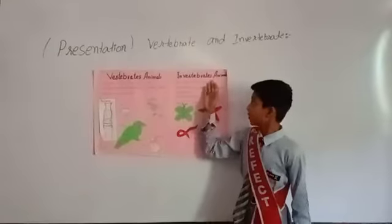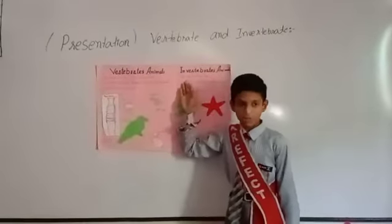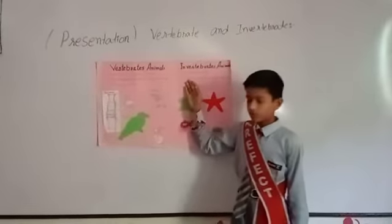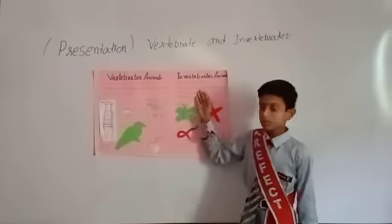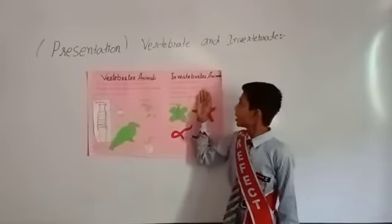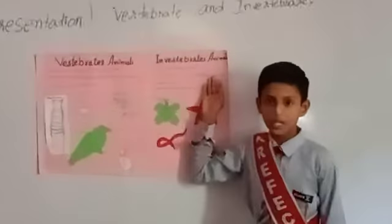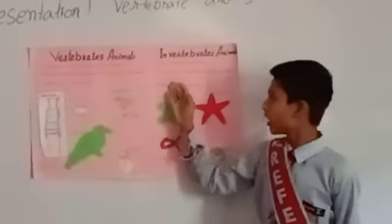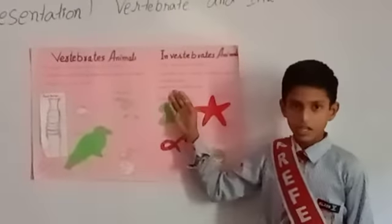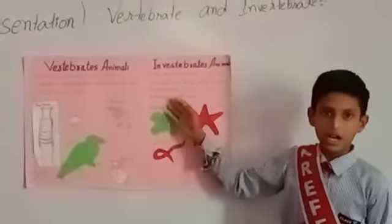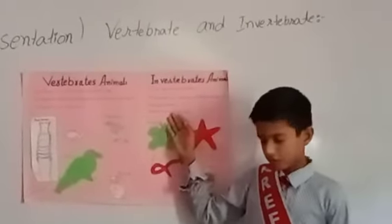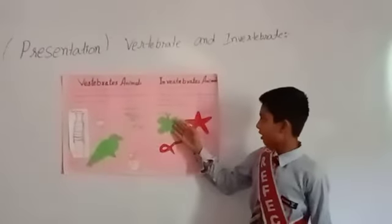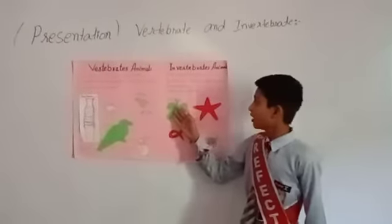In invertebrate animals, they do not have backbones — for example, earthworm or silkworm. Invertebrates are called compound bilated animals. For example, wheat and silkworm type.